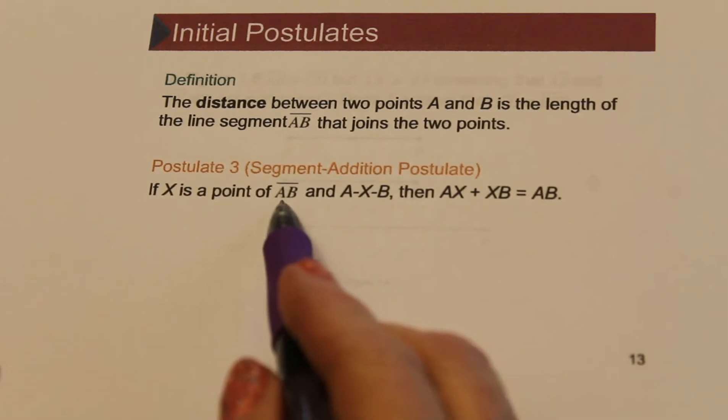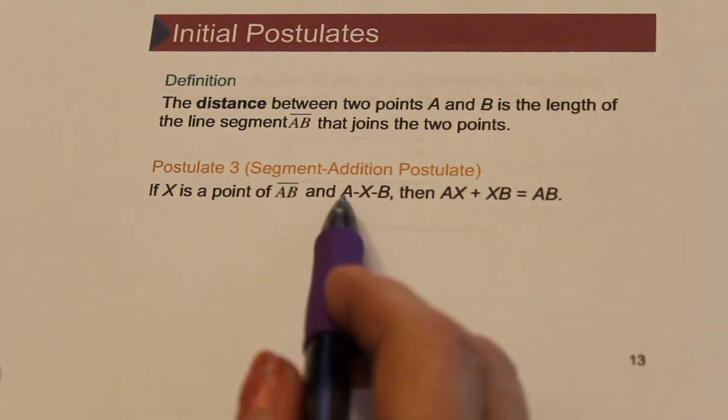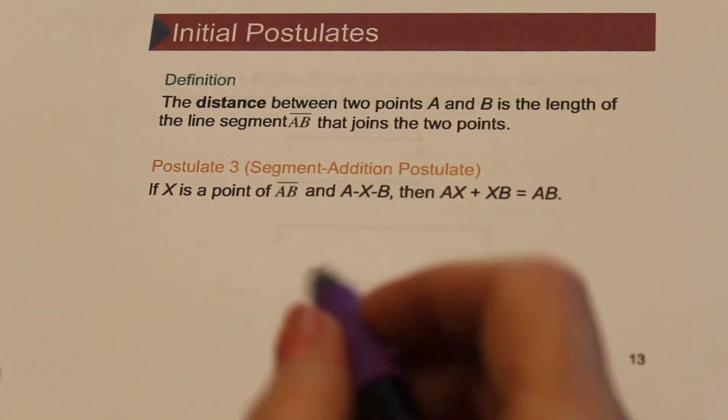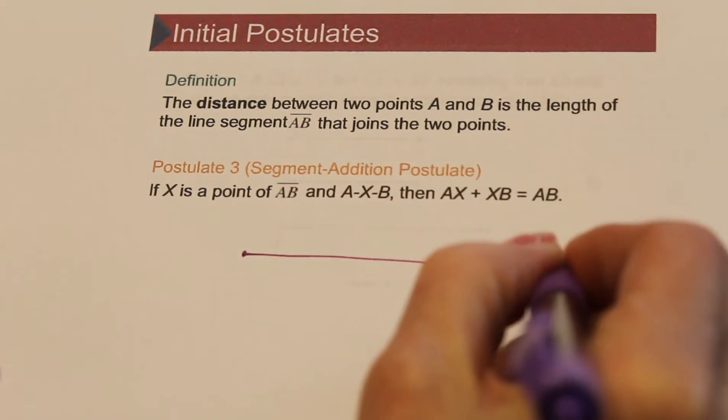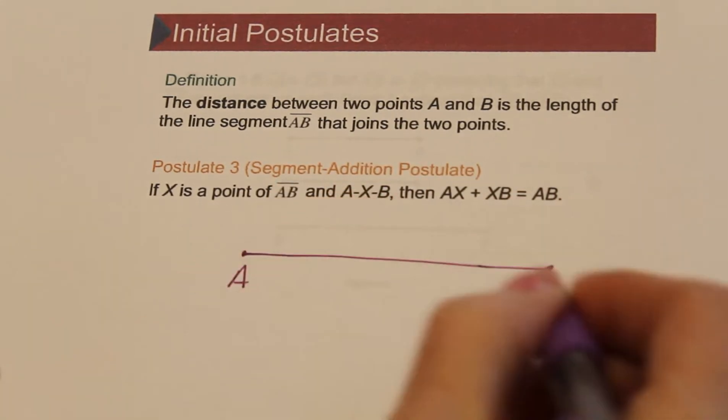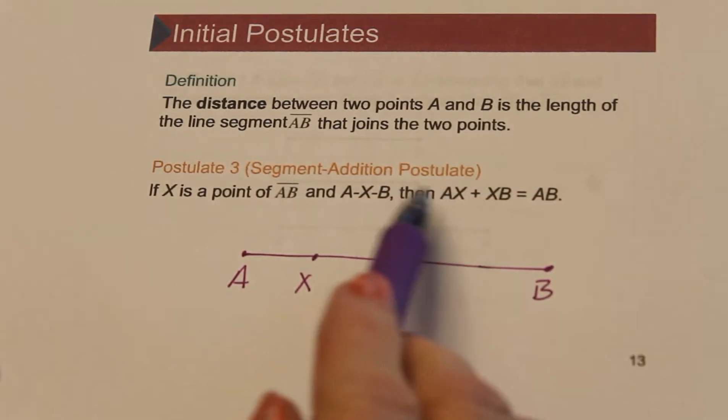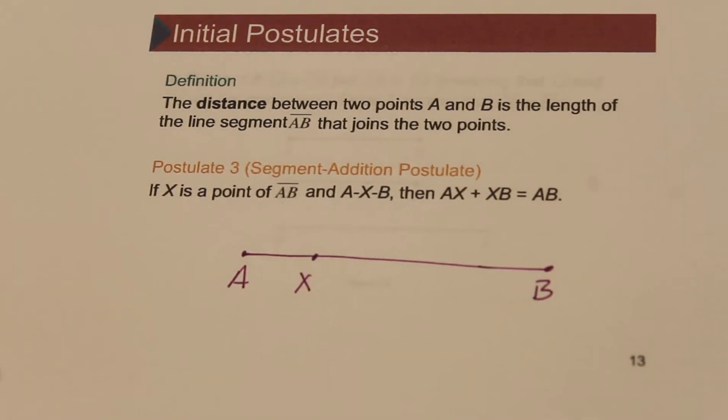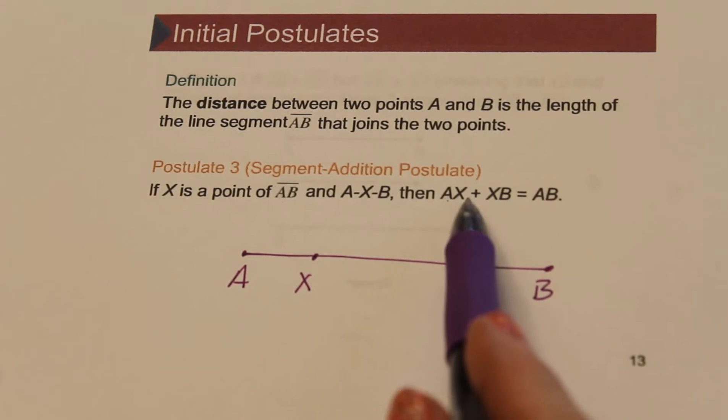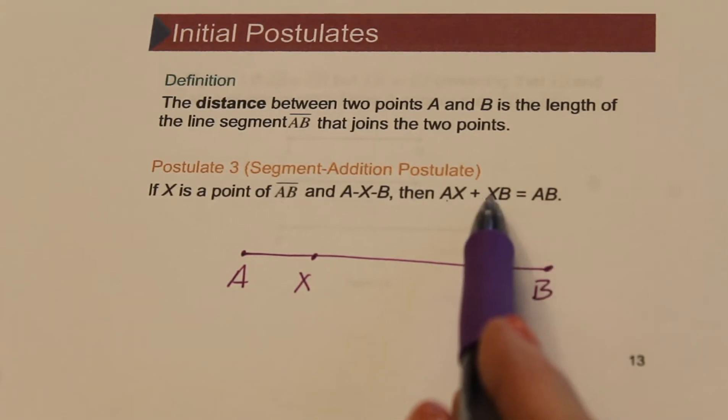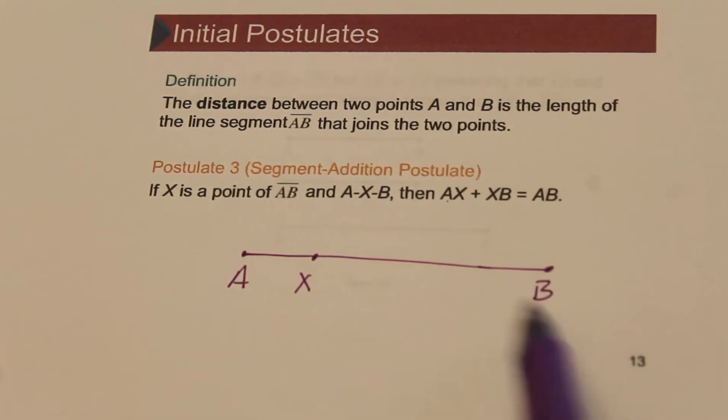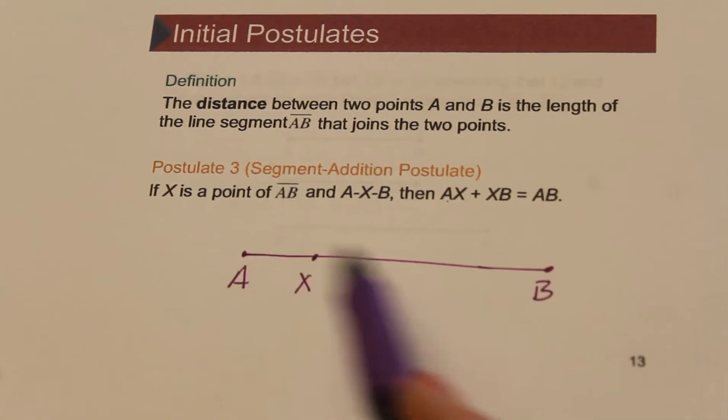So if X is a point on the segment AB and X is between A and B, alright, so here's segment AB, we're going to put point X between. Then the length of AX plus the length of XB must equal the length of AB.